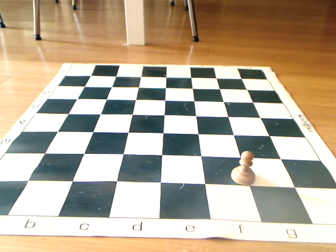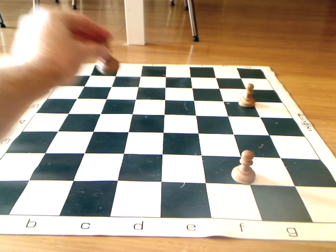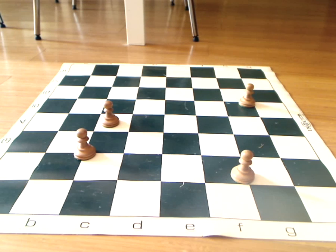The second person does the same thing; they put a pawn anywhere that they want to on the board. And then it's the first player's turn to go, so again they put a pawn anywhere on the board that they want to, and play continues this way, alternating by putting pawns on the board.